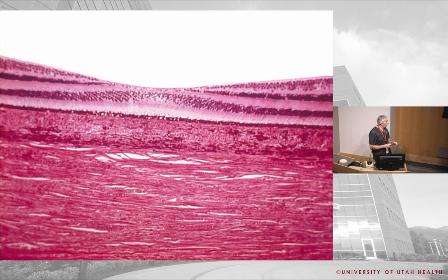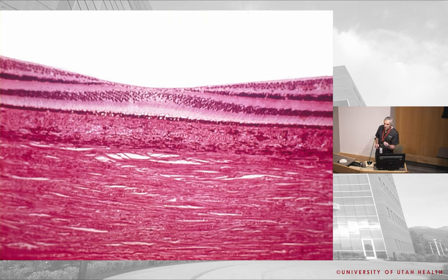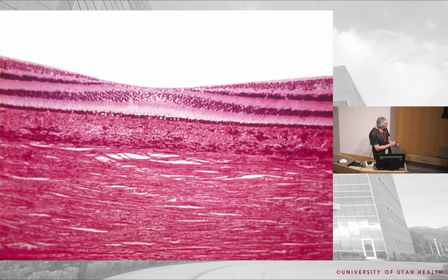The fovea gives you your fine vision. To avoid light rays passing through multiple retinal layers, the retina thins out markedly at the center of the fovea so light can reach the photoreceptors directly. The center of the fovea is very cone-rich, and for fine vision one cone links up with one horizontal cell which links up with one ganglion cell. Because of this, there are many ganglion cells stacked on the sides, and their fibers run obliquely outward.